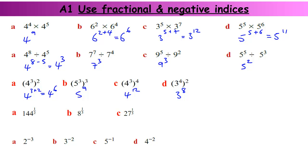Fractional powers: a power of a half is the square root, so the square root of 144 is plus or minus 12, but we'll just use 12. The cube root of 8 — what number times by itself three times is 8 — well that's 2. And the cube root of 27 — what number times by itself three times is 27 — that is 3.